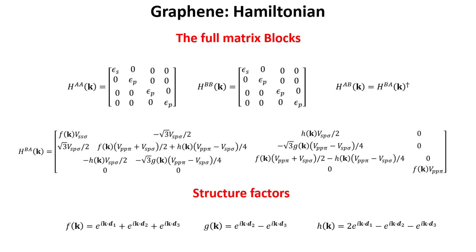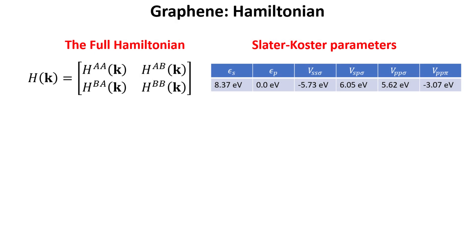Before providing their numerical values, we write down the full matrix Hamiltonian for graphene, including all the other contributions for s, px, py, and pz orbitals. We wrote down all matrices corresponding to the A and B sublattice blocks as per our previous analysis. Note that the AA and BB blocks are independent of momentum k. All dependence on momentum comes from the AB and BA blocks through the structure factors defined below. Putting it all together, the full graphene Hamiltonian in the Bloch basis is shown, and the values of the Slater-Koster parameters are provided in the table. To obtain the band structure of graphene, we need to diagonalize the Hamiltonian.